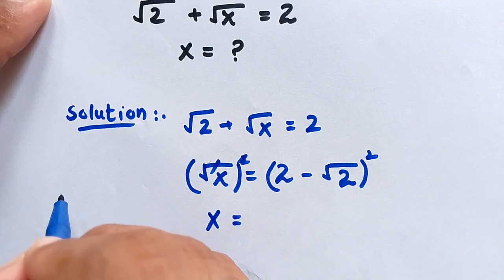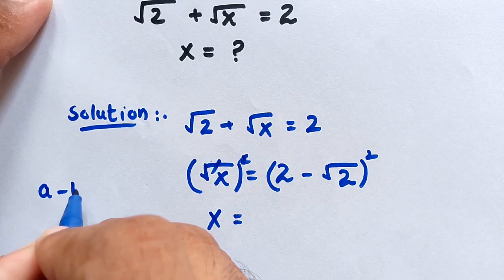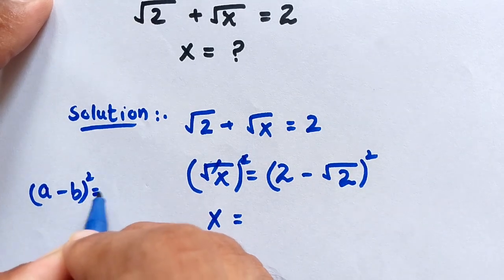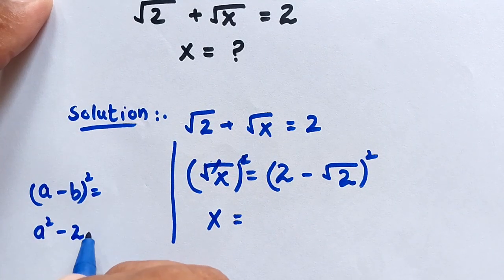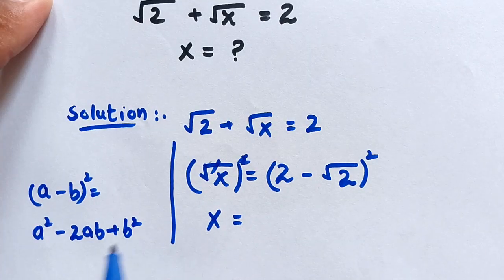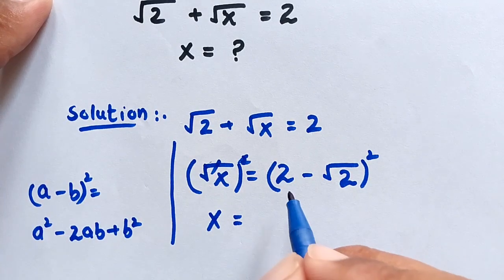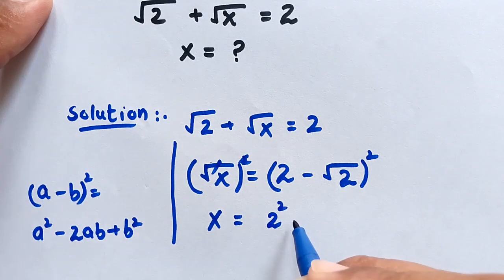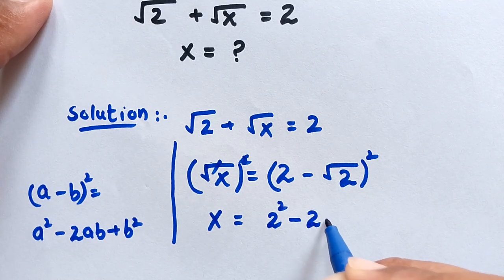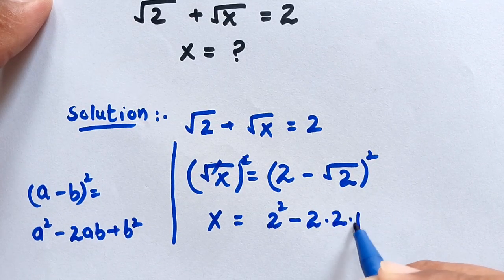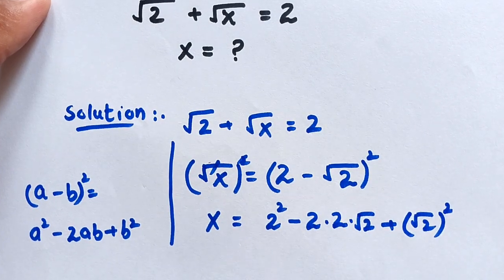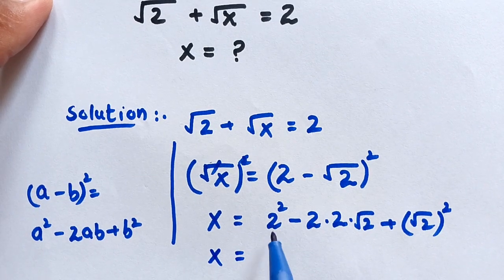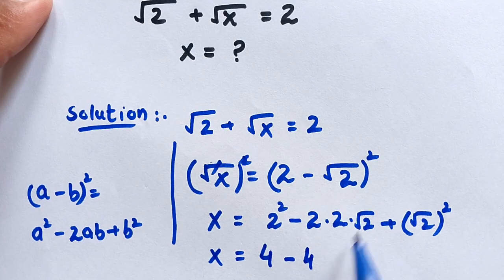This side is in the form of the identity (a minus b) whole square, which equals a squared minus 2ab plus b squared. Applying this identity: x equals 2 squared minus 2 times 2 times square root of 2 plus (square root of 2) squared. So x equals 4 minus 4 times square root of 2...